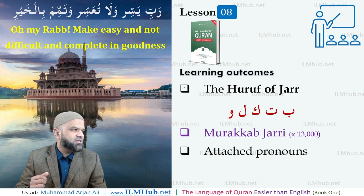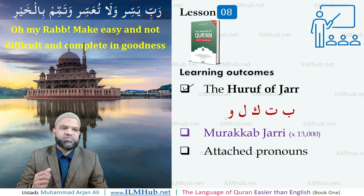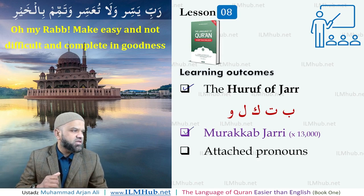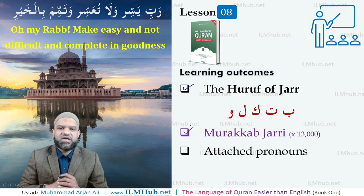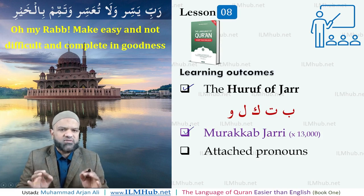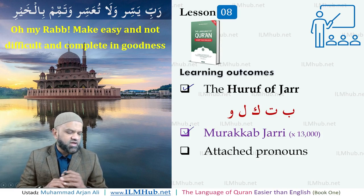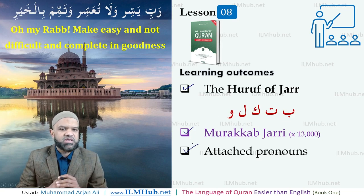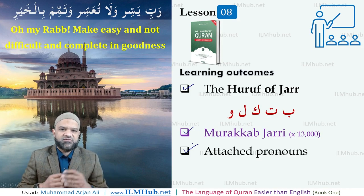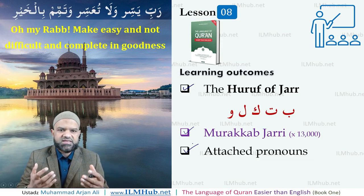In lesson number 8 we are going to deal with the first 5, and in lesson number 9 we will cover the rest. The murakkab jari are used in the Qur'an around 13,000 times — meaning you will see at least one of them in every line of Qur'an. Along with that, they also attach to pronouns. So far we've been dealing with detached pronouns; from this lesson onwards we're going to start looking at attached pronouns.